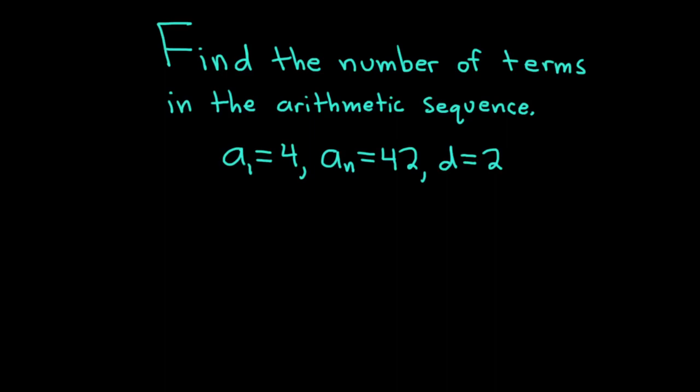In this video we're going to do a problem involving arithmetic sequences. The question says to find the number of terms in the arithmetic sequence. We're told that a sub 1 is 4, a sub n is 42, and d is equal to 2.